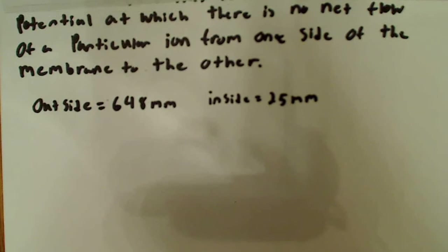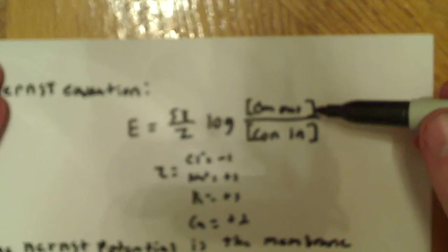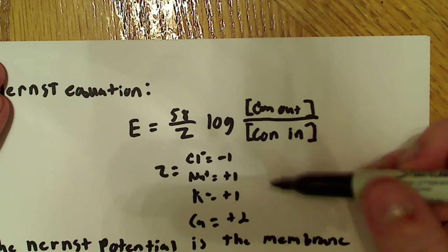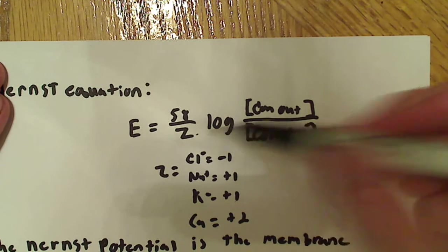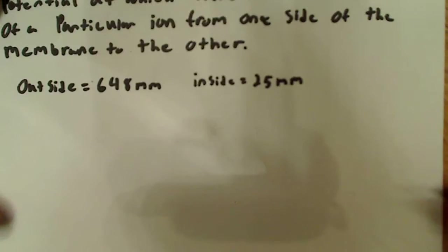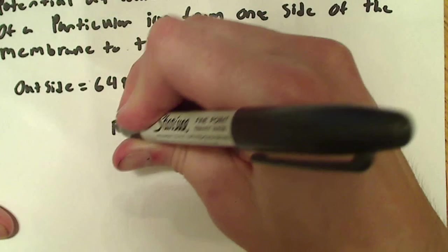Now, basically, this is just a real plug-and-chug problem. I mean, now that I have those things, I can simply just use this and use my little key over here and see that Na, or sodium, is plus 1. So, this Z is just plus 1. It really doesn't make a difference. And I'll simply plug that into the equation.